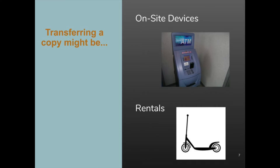There are also some gray areas. Consider the makers of kiosks and other devices. When they deliver units to retail stores, ownership of the device does not change, but the retail store has possession of the device. The device has lots of software on it. Is this distribution of the software? That's a gray area. And what about rentals, like cars or scooters? They all have software on them too. At the end of the day, temporary possession of a device is probably not distribution, but the law is not precisely clear on the topic.